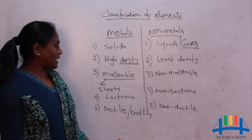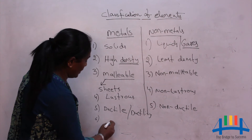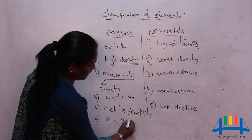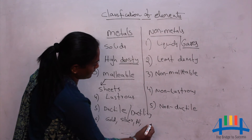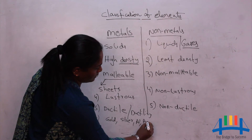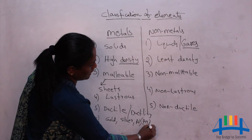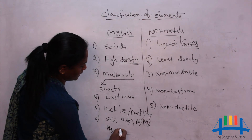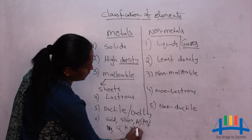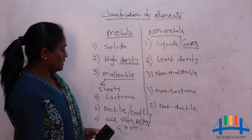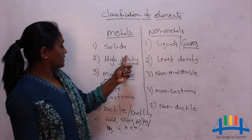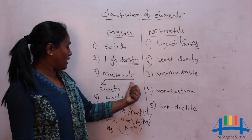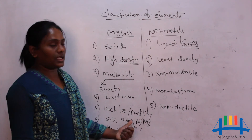Examples of metals include gold (Au), silver (Ag), aluminium (Al), sodium (Na), lithium (Li), potassium (K), and many more. All these have the properties of metals: they are solids, have high density, are malleable, lustrous, and ductile in nature.